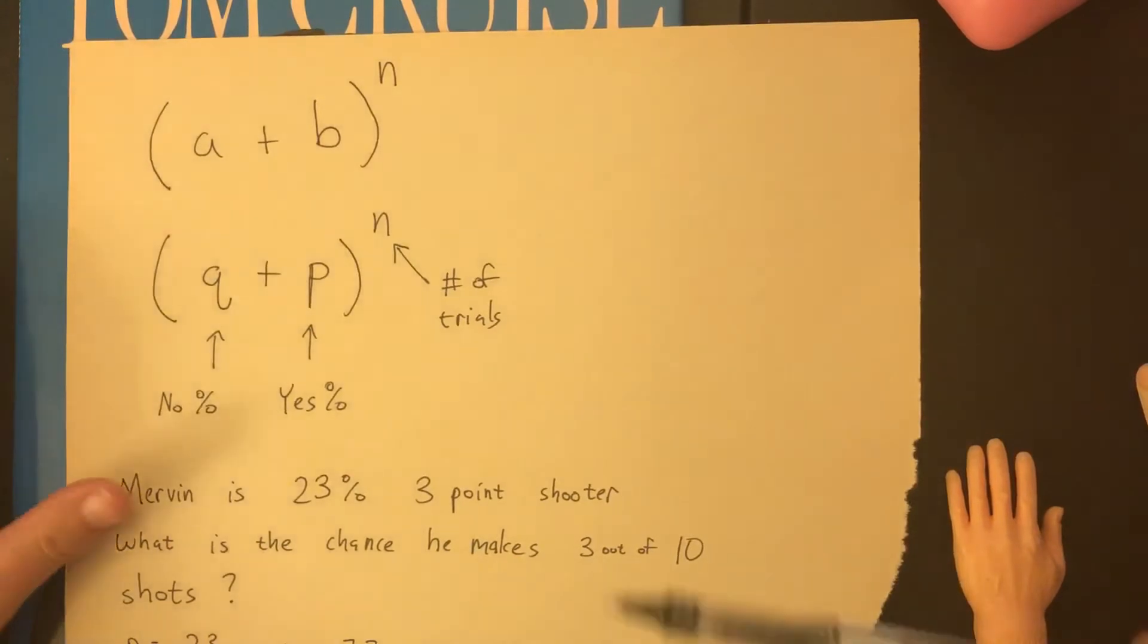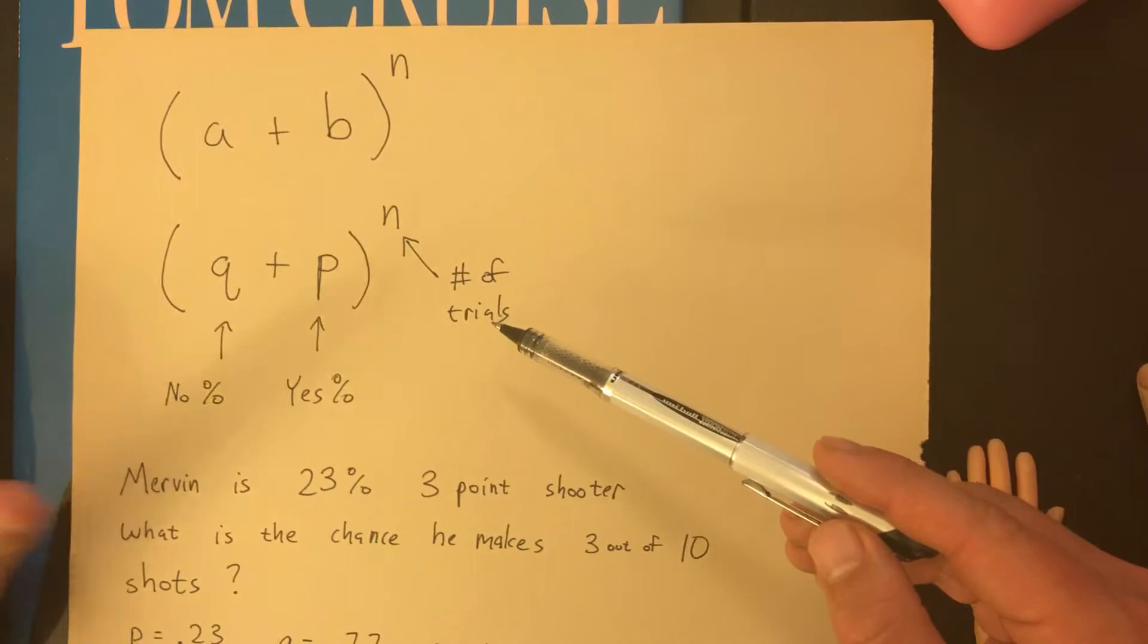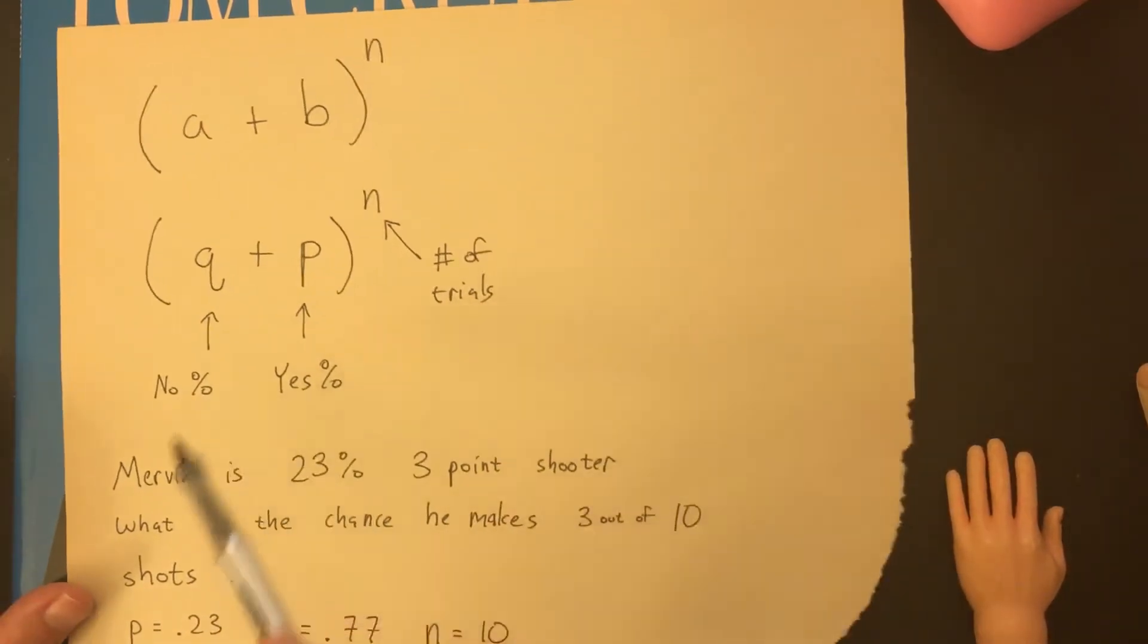So take a look now. Do you see the similarity? Here, it'll be a problem with probability, but you can identify that it's a binomial probability in two ways. One way is there's only two options for a question: options of success or failure. It works or it doesn't work. Yes or no.